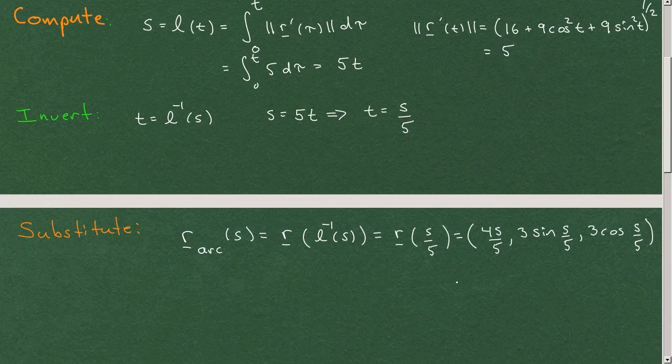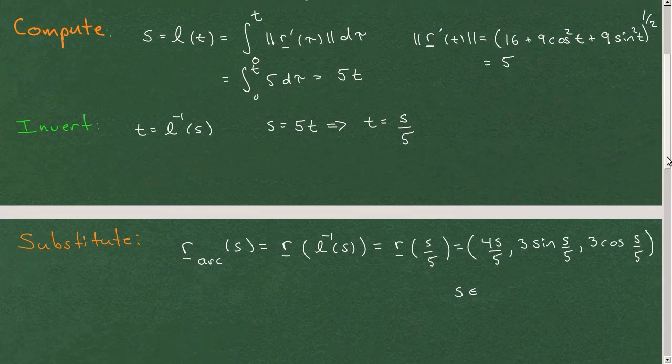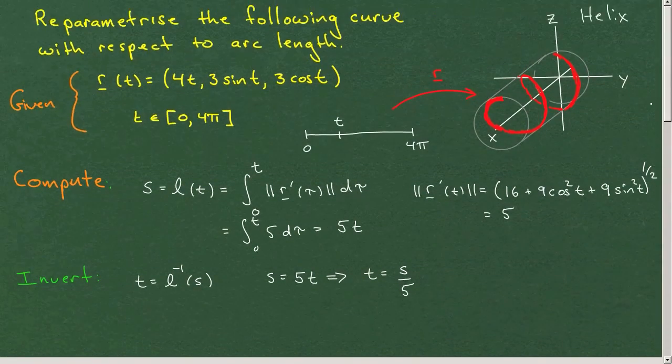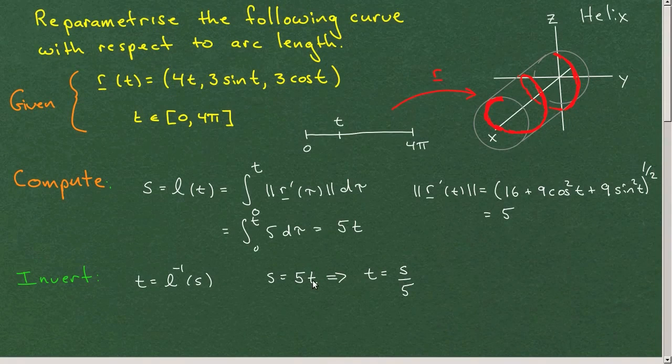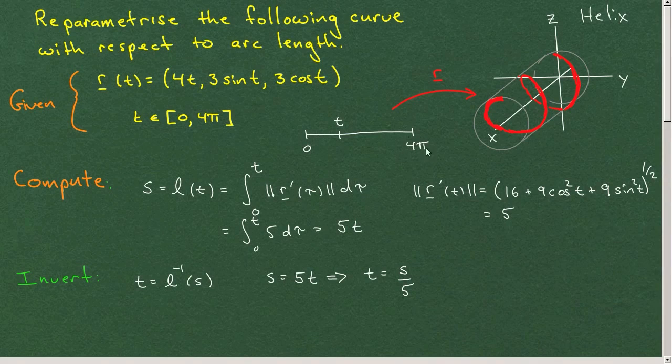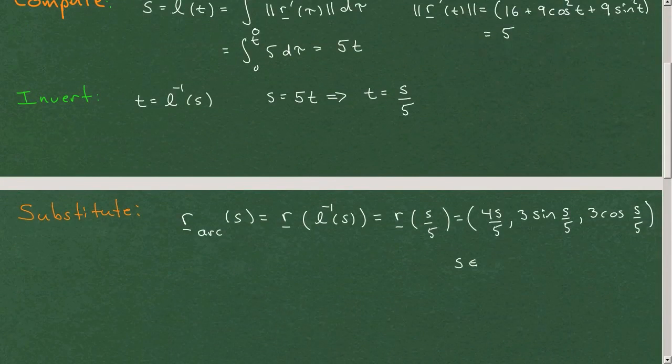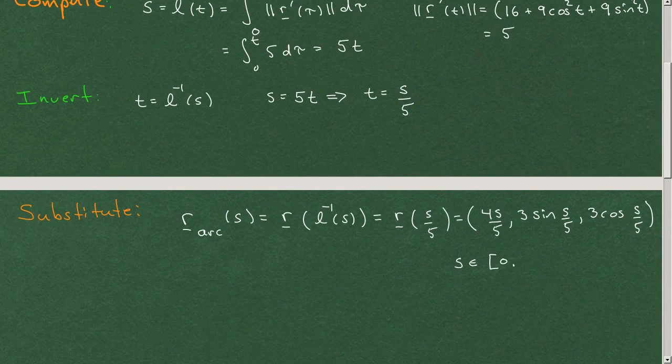And then just to complete this, we should state what the interval of s is. And s will be an element of, well, you have to look to see, when t is 0, 5 times 0 is 0. And when t is 4π, 5 times 4π is 20π. So this interval is from 0 to 20π.